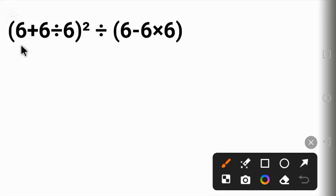In this equation, we begin with 6 divided by 6, which is 1. So we have 6 plus 1 raised to power 2 divided by 6 times 6, which is 36. So we have 6 minus 36.